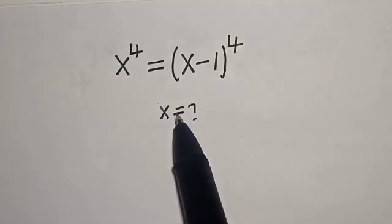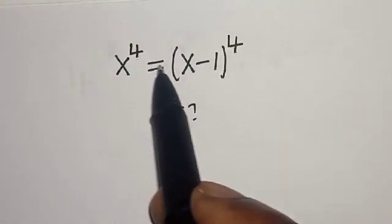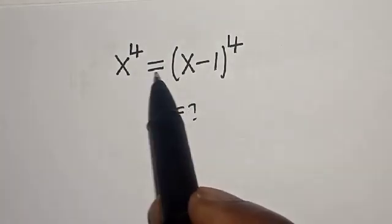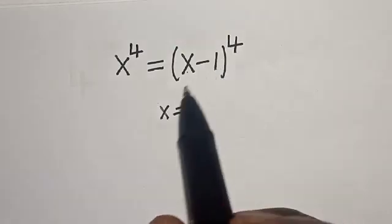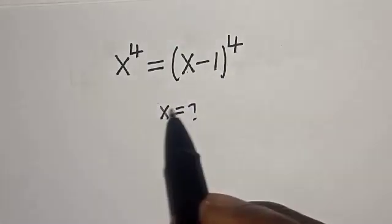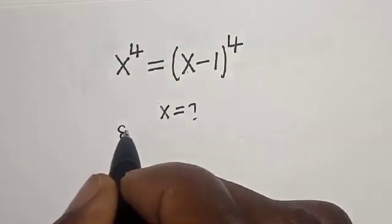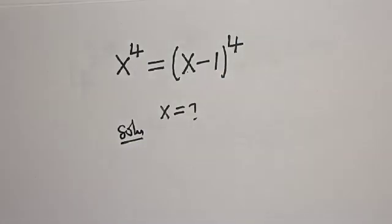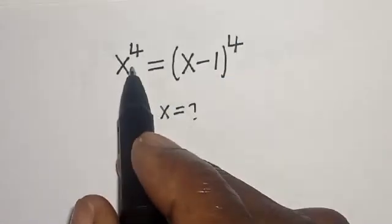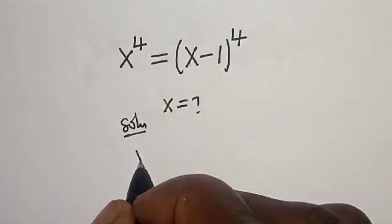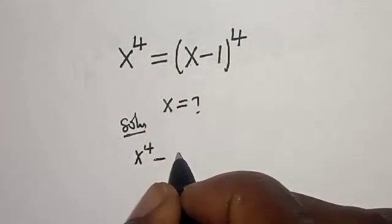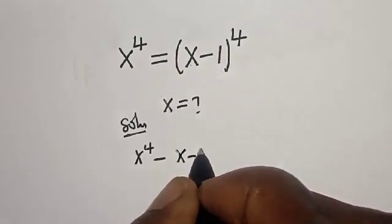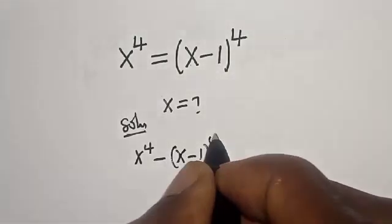Hello, welcome to Magic. In this class we want to find the value of s from this given polynomial equation: s raised to power 4 is equal to (x minus 1) raised to power 4. Solution: this is s to the power of 4 minus (x minus 1) to the power of 4.